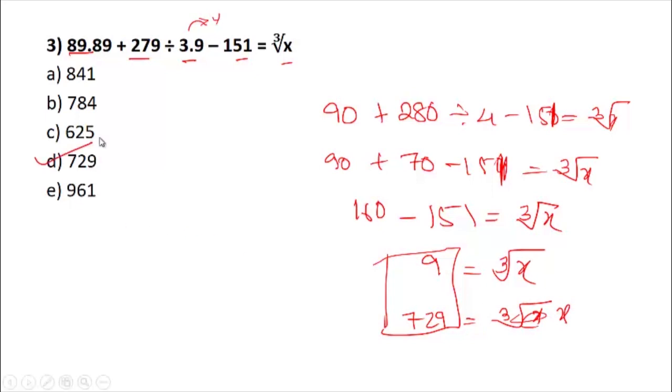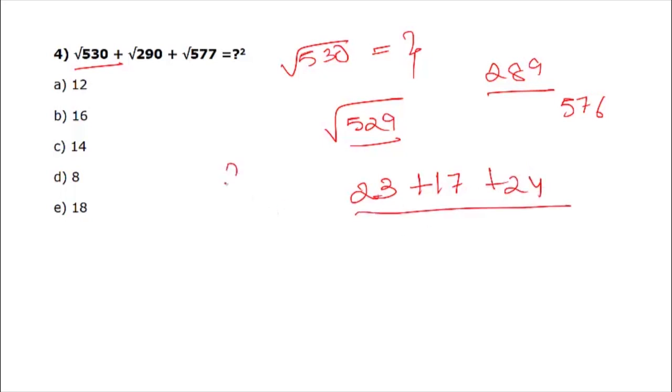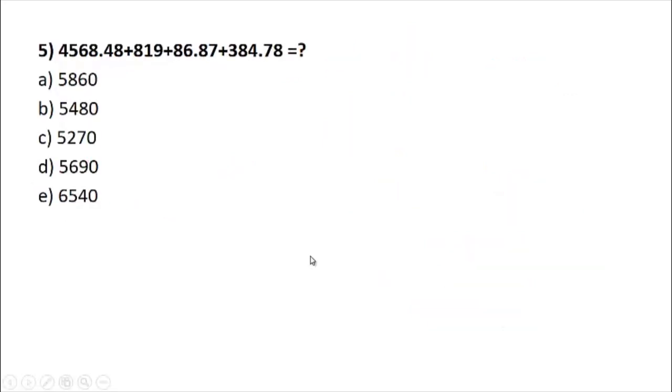We are taking the next problem. Square root of 530 could be written as 529, which is the square of 23. 290 could be written as 289, which is the square of 17. 577 could be written as 576, that is 24. Add all this: 23 plus 17 is 40, plus 24 is 64. So x squared equals 64, x equals 8. Your correct option would be D.